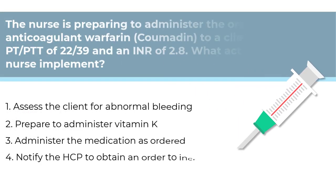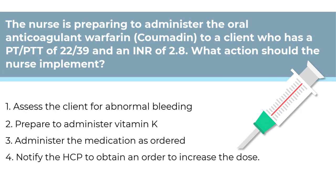Here's question three. The nurse is preparing to administer the oral anticoagulant warfarin, or Coumadin, to a client who has a PT-PTT of 22 and 39 and an INR of 2.8. What action should the nurse implement? Number one, assess the client for abnormal bleeding. Number two, prepare to administer vitamin K. Number three, administer the medication as ordered. Number four, notify the HCP to obtain an order to increase the dose.